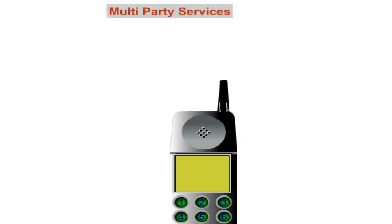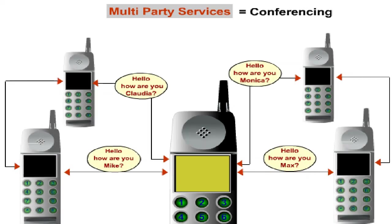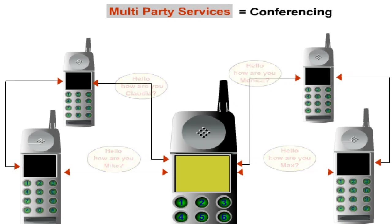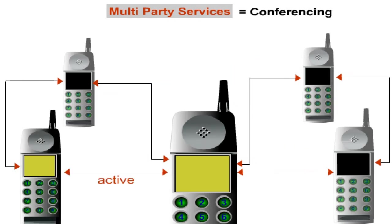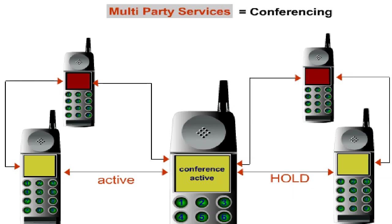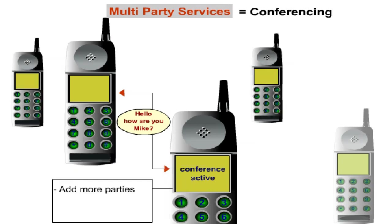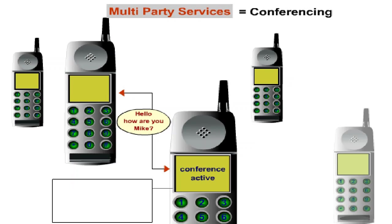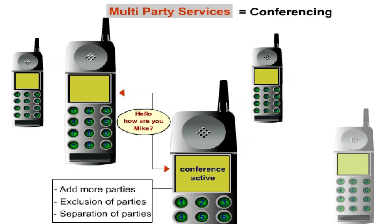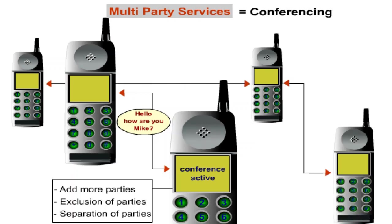Multi-party services, also called conferencing services, allow the customer to communicate with more than one party simultaneously. The multi-party service can be initiated if a customer is in control of at least one active call and one call on hold. After it's been initiated, parties can be added, disconnected or separated. The subscriber initiating the service can add more parties to the multi-party call and exclude others from conversation. At the same time, he can have a private conversation with another party which the other participants cannot hear, while the remaining participants of the multi-party call can still communicate with each other.